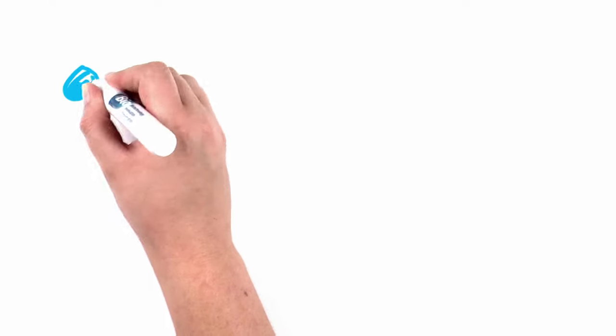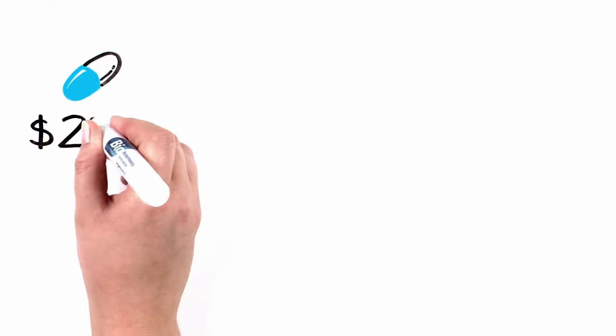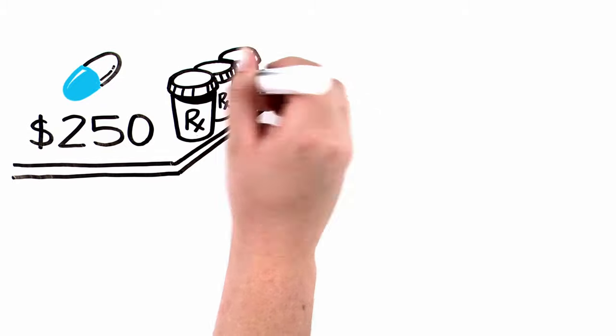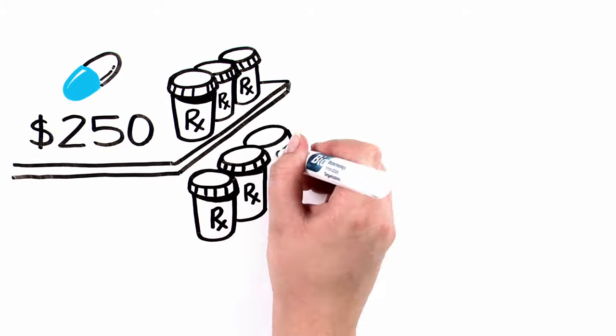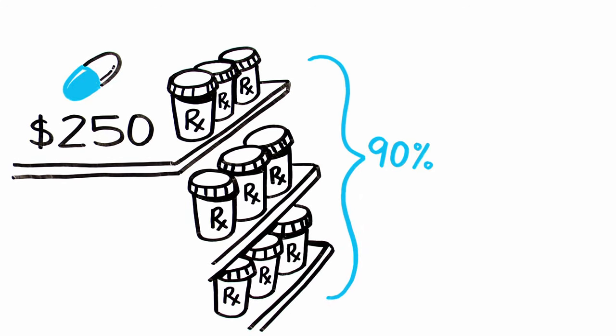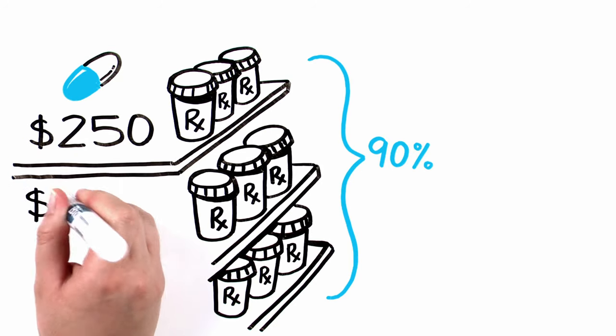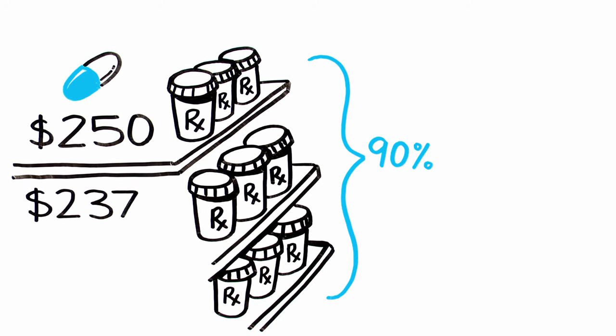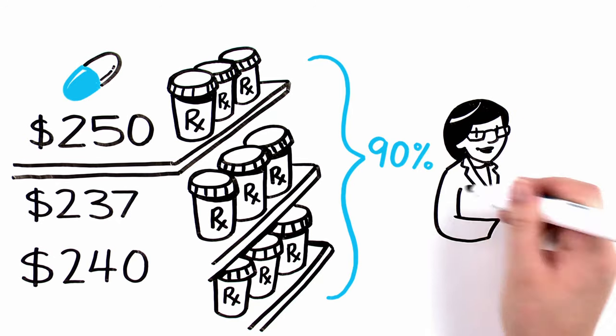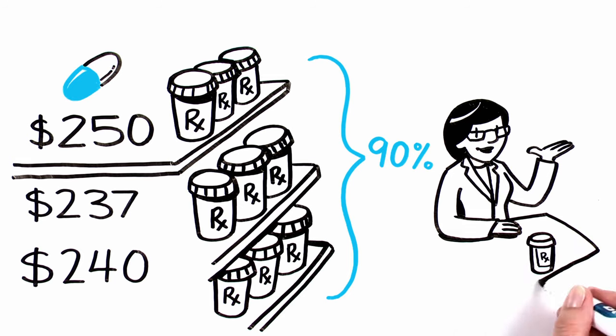It starts with a drug manufacturer's list price, but this isn't the money a manufacturer makes. First, a wholesaler buys the drugs. Three major wholesalers control 90% of the market. These Fortune 25 companies can negotiate discounts off the list price. Then they mark up the drug and sell it to a pharmacy. That's how the drug gets to the store.